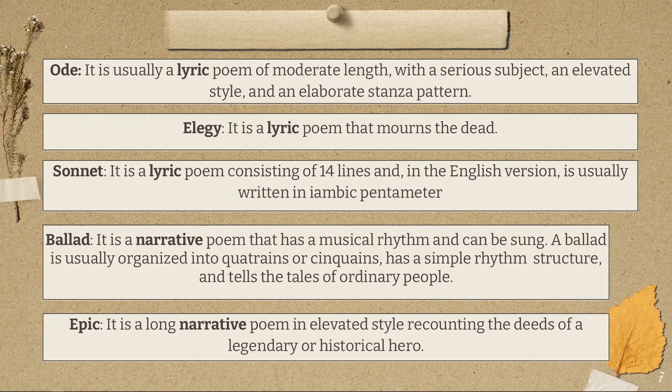A ballad is a narrative poem that has a musical rhythm and can be sung. A ballad is usually organized into quatrains or sestets, has a simple rhythm structure, and tells the tales of ordinary people. An epic is a long narrative poem that in elevated style recounts the deeds of a legendary or historical hero.